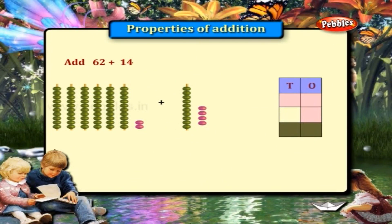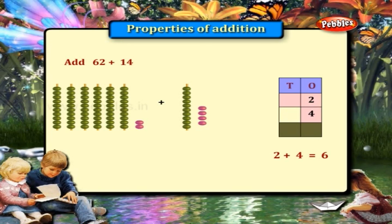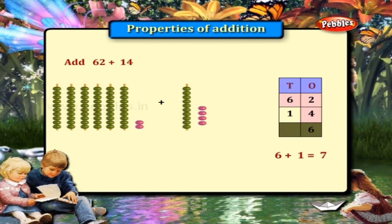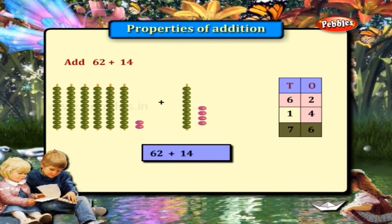Add 62 plus 14. 2 and 4 are in the ones place. When you add 2 and 4 you get 6. Write 6 in the ones place. 6 and 1 are the numbers in the tens place. Add 6 and 1, we get 7. Write 7 in the tens place. So the answer is 62 plus 14 is equal to 76.